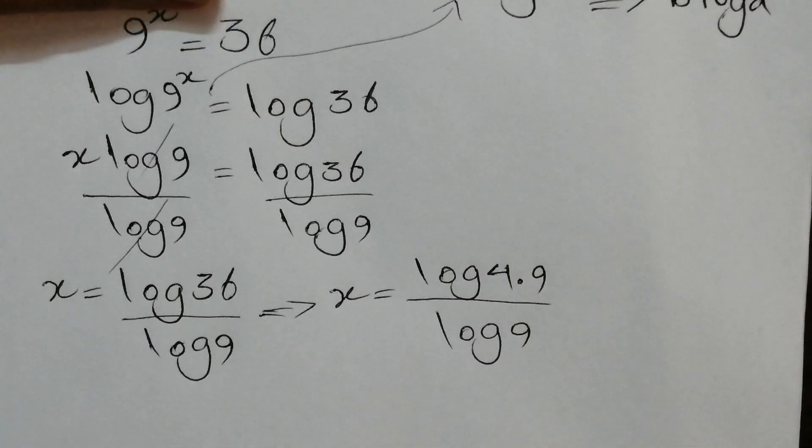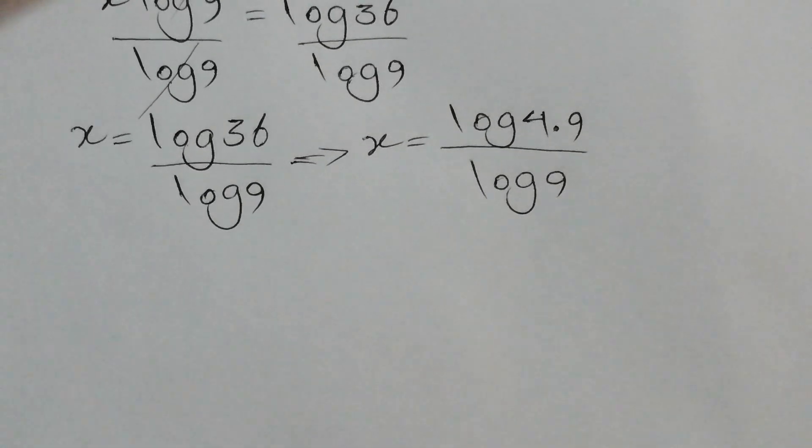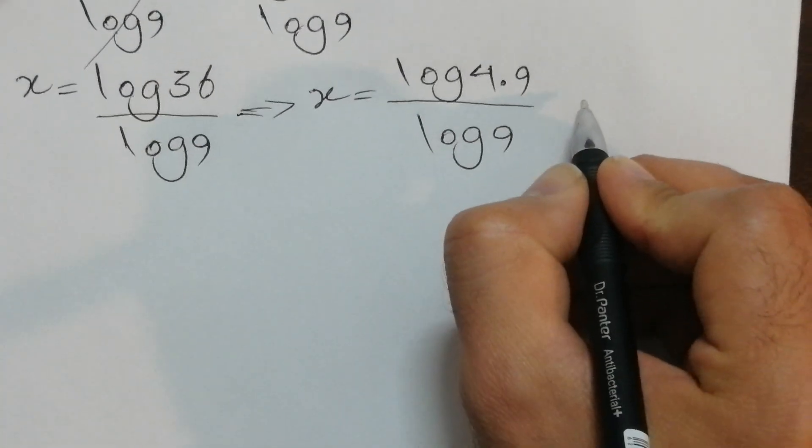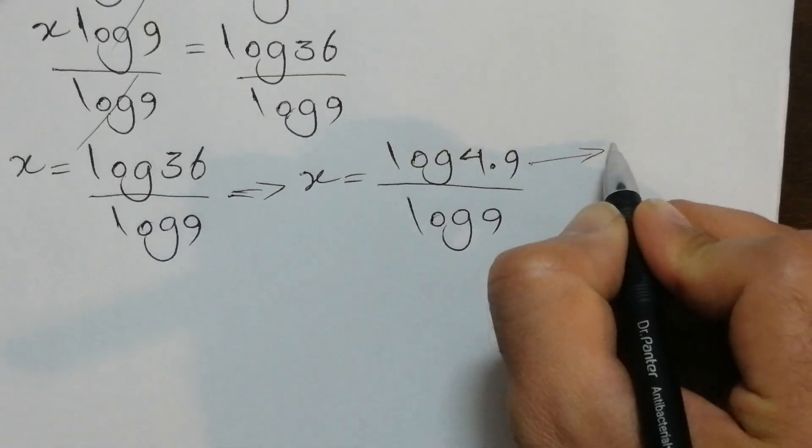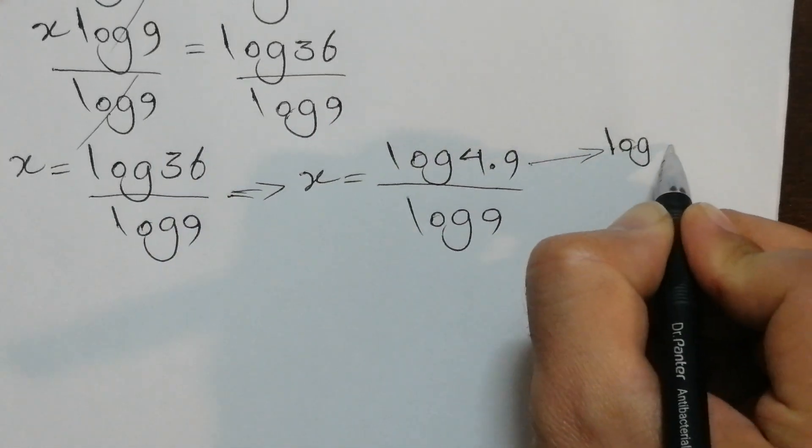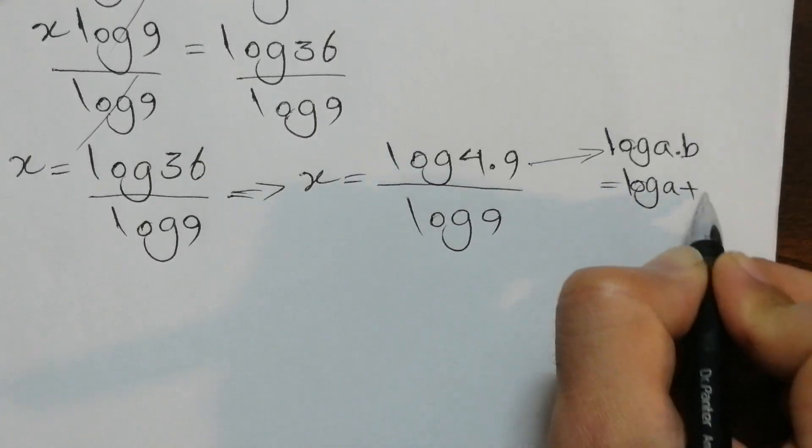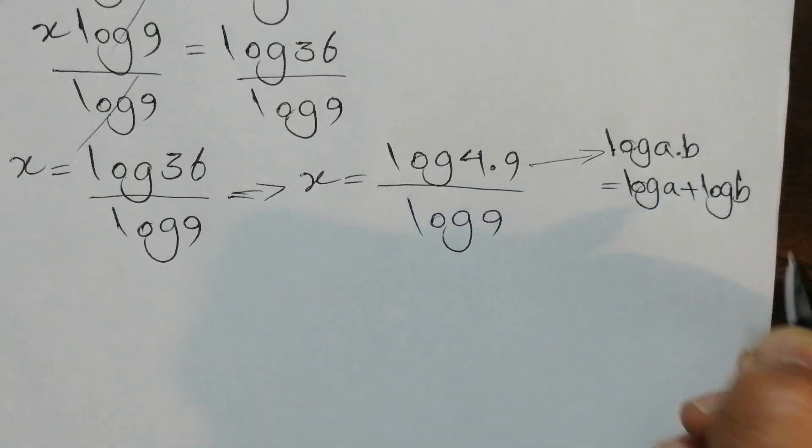Based on the laws of the logarithms, we can rewrite it as this. Whenever we have, this is a law: log a times b equals log a plus log b.